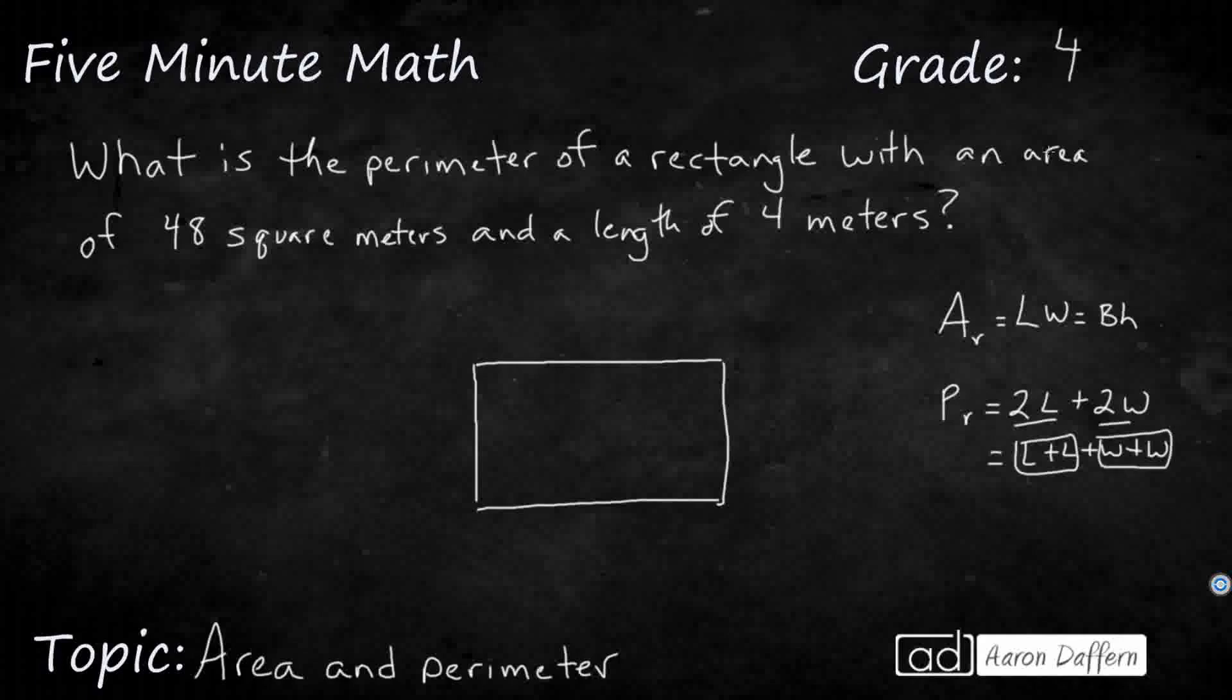So what do they give us? They're looking for the perimeter and give us the area. Inside we've got 48 square meters. I'm going to write square meters with that little exponent too—that's more common in upper grades. So you've got 48 square meters.